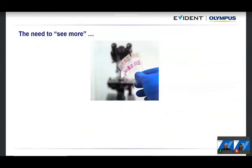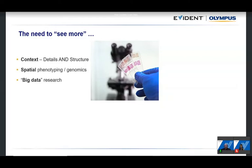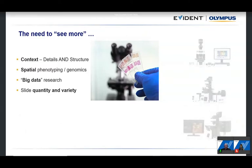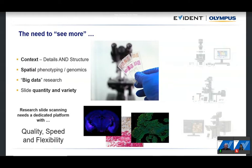There is definitely the need to see much more in the laboratory — you want to see more details and structure while doing spatial phenotyping or genomics. You need to acquire big data and scan a lot of slides. Traditional instruments like uprights, inverted microscopes, or confocals are not tailored for slide scanning. For research slide scanning you need a dedicated system that brings quality, speed, and flexibility.